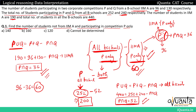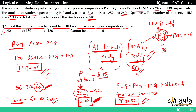The question asks for students not from IMA participating in P only. Students from all B schools in P only is 200, and IMA students in P only is 60. So 200 − 60 = 140 is the correct answer to the first question.